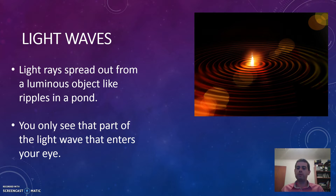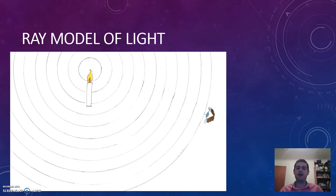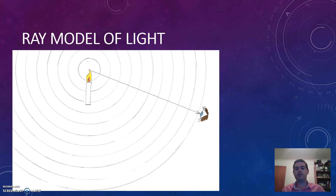Whenever you have something luminous like a candle producing its own light, those light rays spread outwards a bit like ripples in a pond when you drop a stone — only in three dimensions, like concentric spheres expanding outwards. You might think that's not what you see when you look at a candle, and you'd be right — you only see that part of the light that actually makes it to your eye. The light moves off in all directions, but we only see the part that goes directly into our eye.